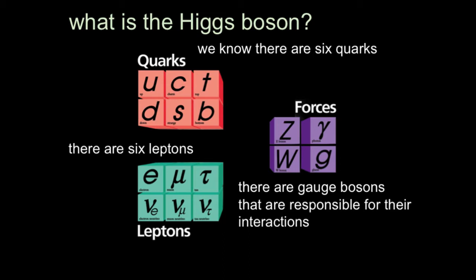We now know for sure that there are six quarks. There is some suspicion, and good reason for that suspicion, that there are more, but so far we haven't seen them. We also know there are six particles called leptons. You're all familiar with one of the leptons — the electron — but it has five other friends similar in some ways in their behavior to the electron, although very different in detail.